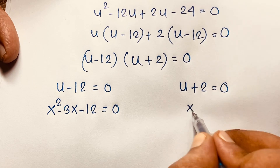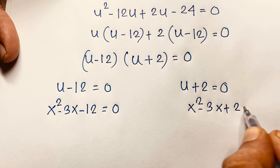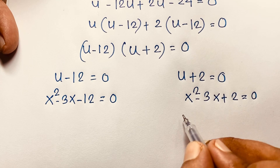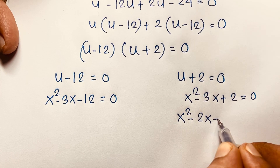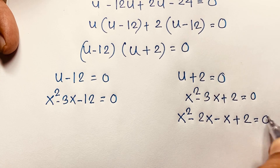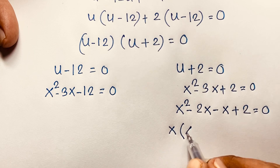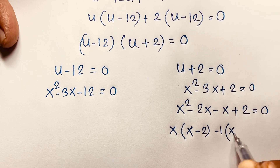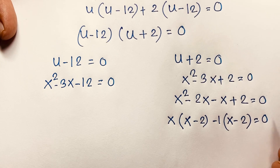In the other case, x squared minus 3x plus 2 is equal to 0. Now I apply the middle-term factor method here, so it will be x squared minus 2x minus x plus 2 is equal to 0. Taking x as common: x(x minus 2), and this divide gives x minus 2.